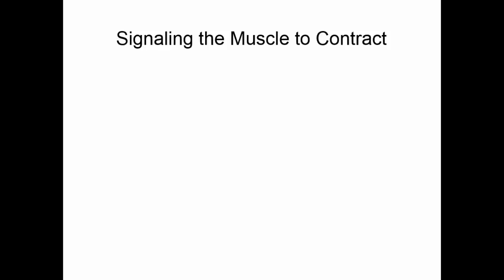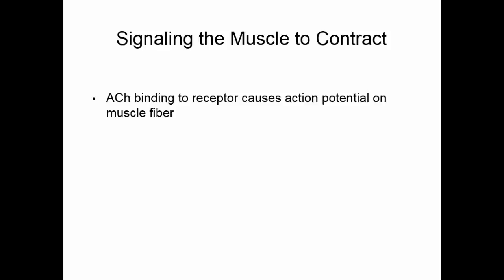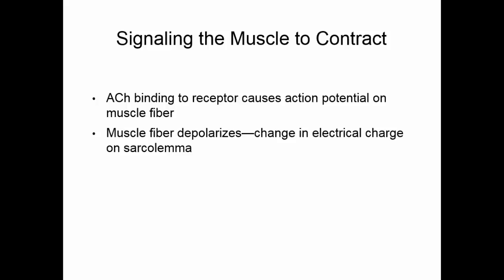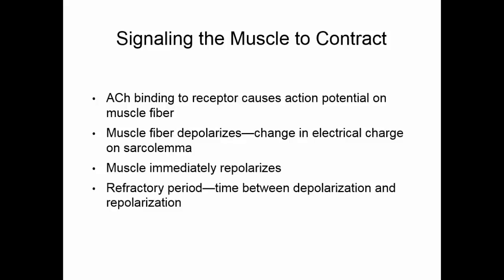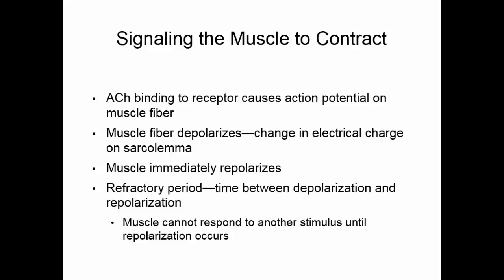The muscle will be signaled to contract when the acetylcholine binds to its receptor. This is going to cause an action potential to start on the muscle fiber — we say that the muscle fiber depolarizes, meaning there's a change in the electrical charge on the sarcolemma. The muscle will immediately repolarize, going back to what it was before. There is a refractory period — a little bit of time between the depolarization and the repolarization during which the muscle cannot respond to another stimulus. Repolarization has to occur before another stimulus can be accepted.